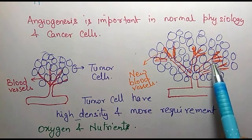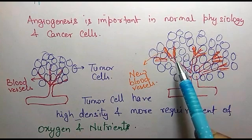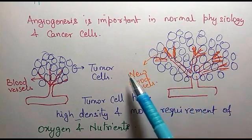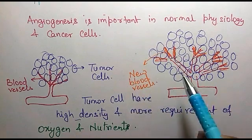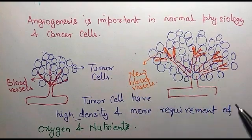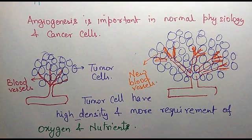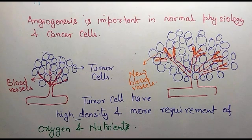These new blood vessels which are formed provide the tumour with nutrients as well as oxygen. Therefore, the tumour always induces angiogenesis in order to grow.